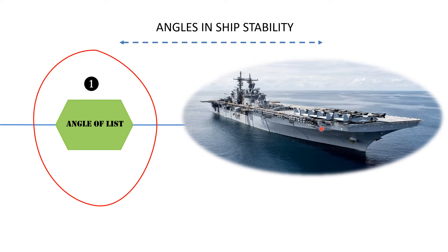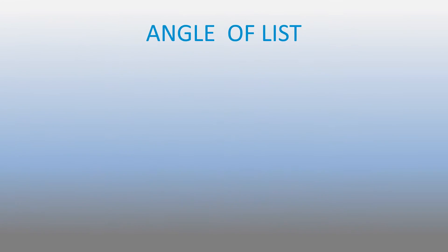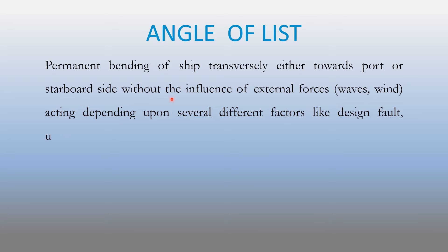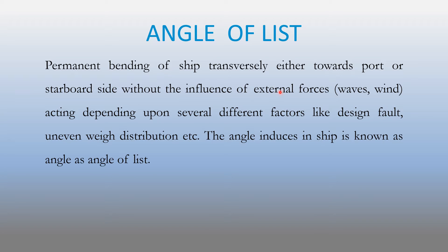This is an upright ship — it is not bending either to port side or starboard side, so this ship has zero angle of list. Here is the definition of angle of list: permanent bending of a ship transversely, either to port or starboard side, without the influence of external forces like waves or wind, depending upon several different factors like design or uneven weight distribution. This angle is known as the angle of list.